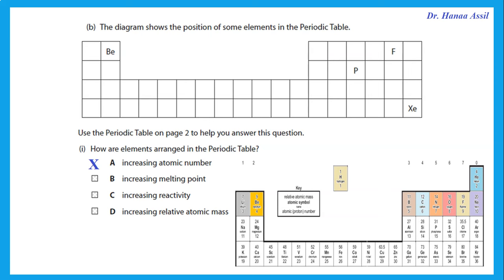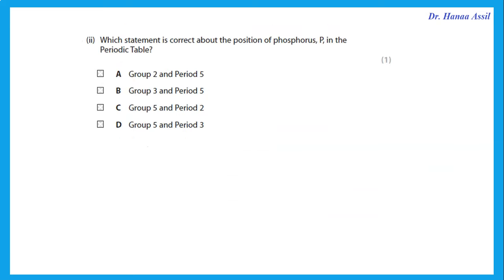We start from hydrogen, atomic number 1; helium, atomic number 2; lithium, 3; beryllium, 4; boron, 5; and so on. So we arrange the elements in the periodic table according to their atomic number.